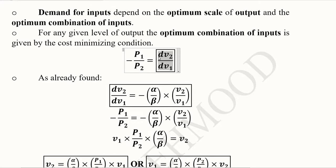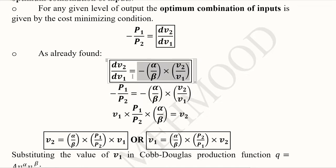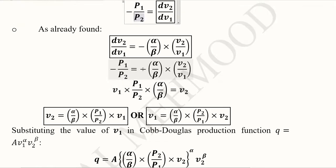Recalling the slope of the isoquant, we have developed it in previous videos for the Cobb-Douglas production function. We substitute this value into the tangency condition. The left-hand side remains the same, the negative signs cancel out, and we arrive at a new form of the equation.